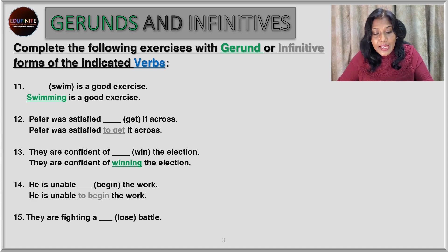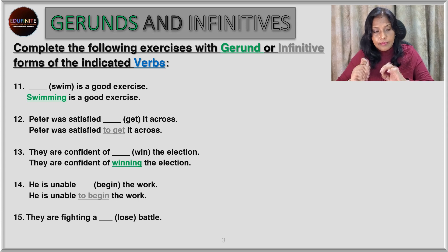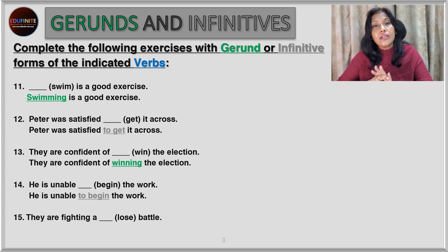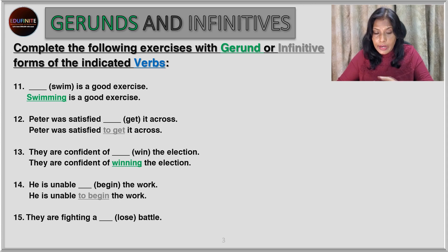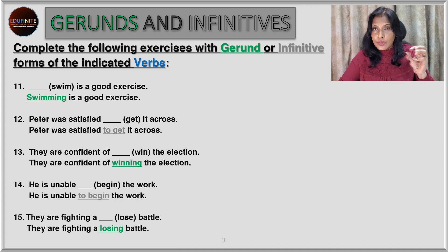He is unable to begin the work. After certain words like 'unable', we use only the infinitive form — 'to begin', not 'beginning'. Next: they are fighting a losing battle. Here we have an article, and an article is always followed by a noun. So we use the gerund form — 'a losing battle', not 'a to lose battle'. It's always the gerund form after an article.